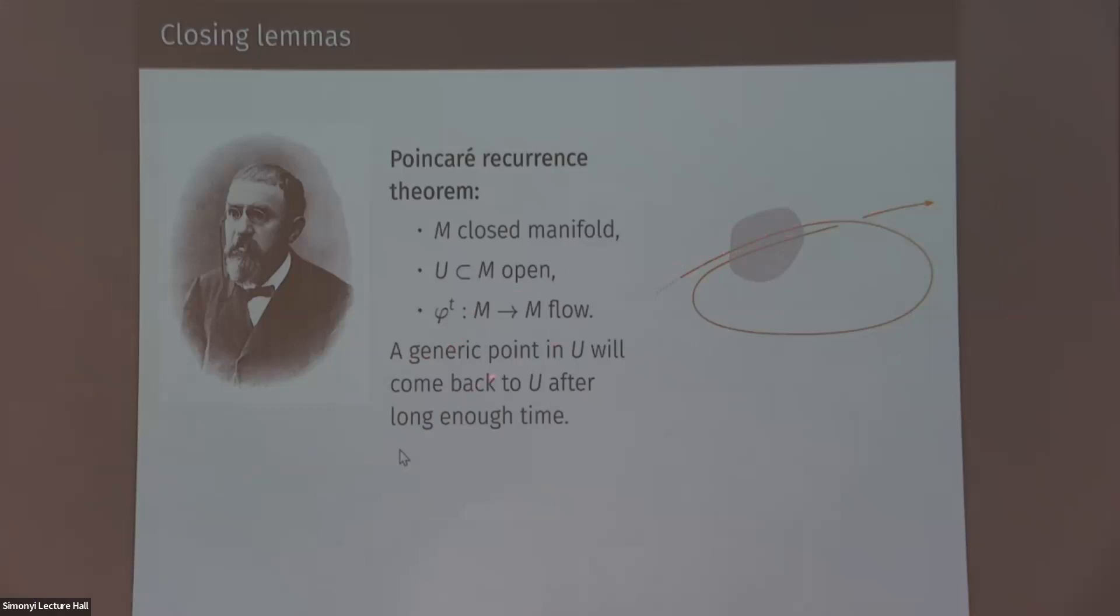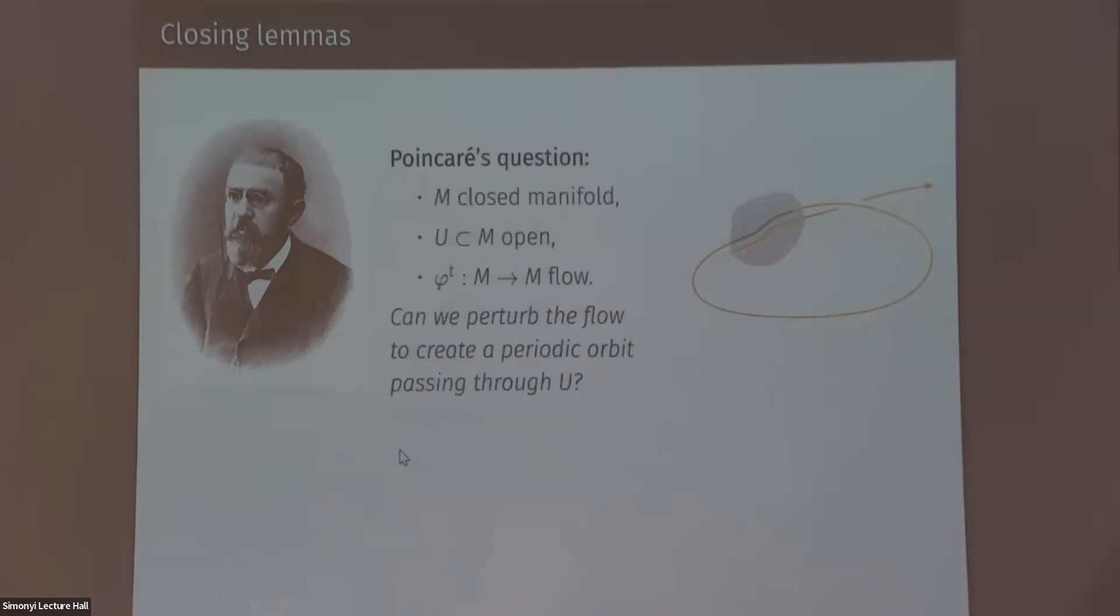So basically points generically tend to come back arbitrarily close to the original point. So all around your manifold, you have this picture of almost closed orbits. And now it's kind of natural to ask, looking at this picture, can we just change a little bit the flow to close up this orbit into an actual periodic orbit? So this was the question by Poincaré, can we perturb the flow to create a periodic orbit passing through the open set U?